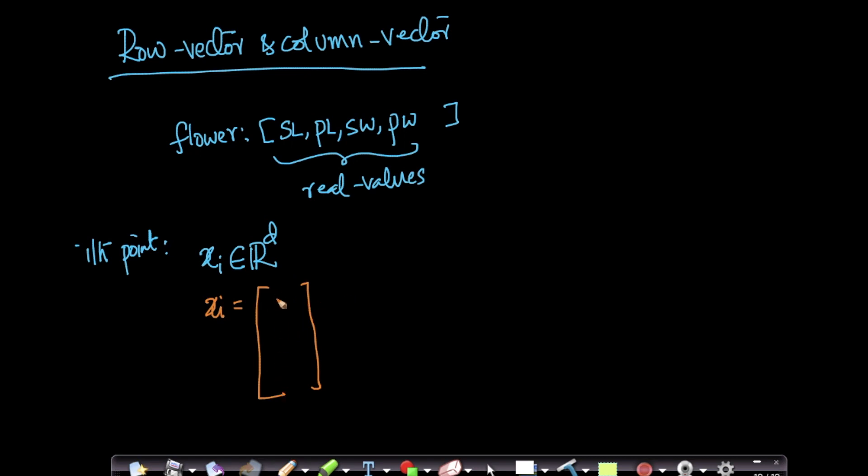Okay, so a d-dimensional vector where I have, so for example, I could have xi1, xi2, xi3, so on so forth, xid. This is a d-dimensional vector.